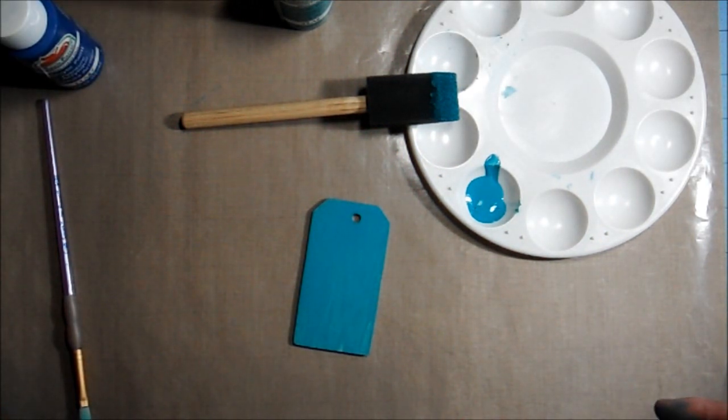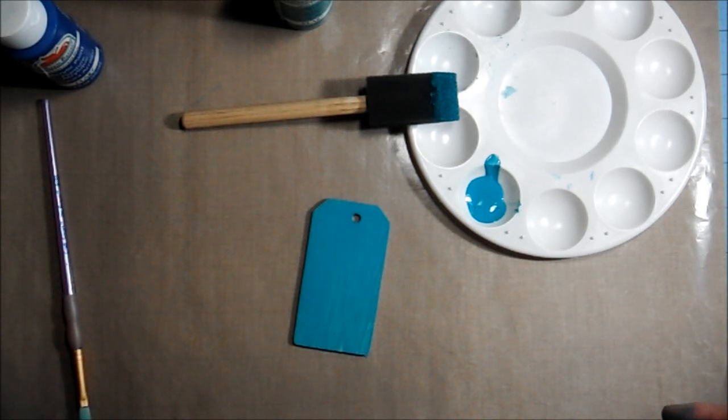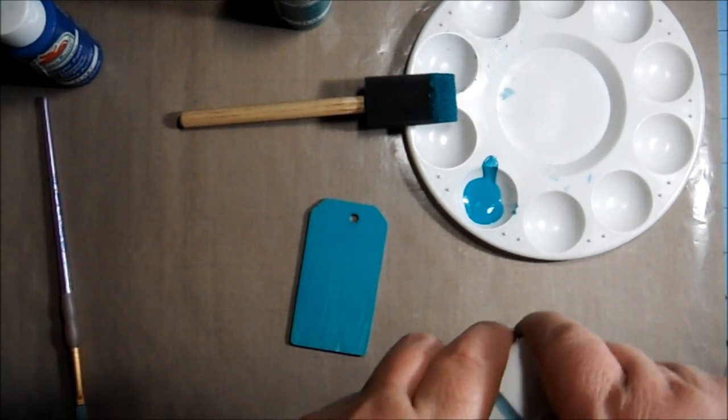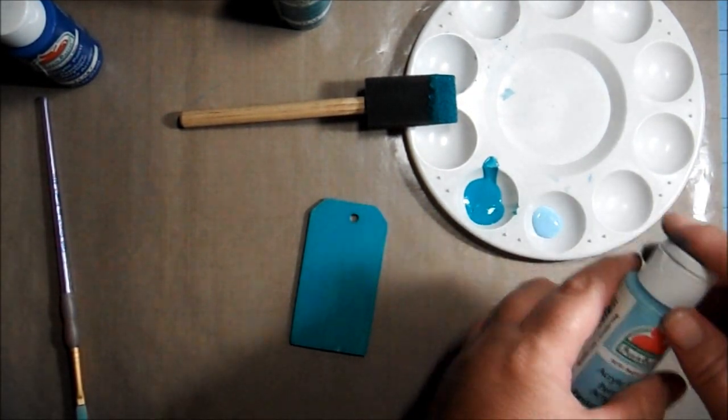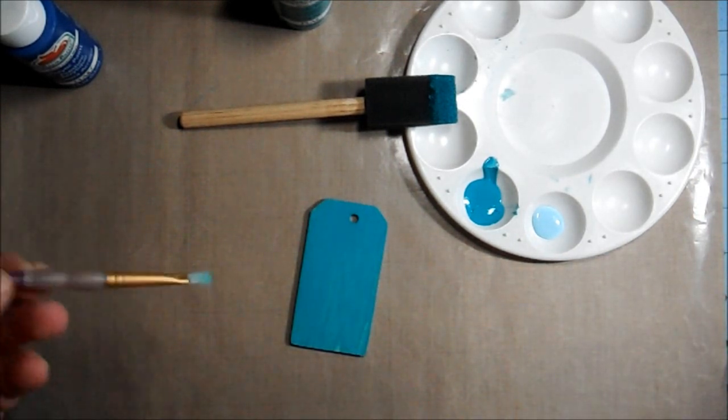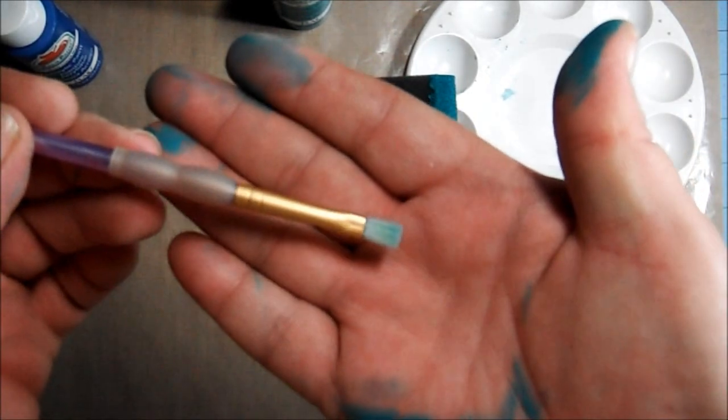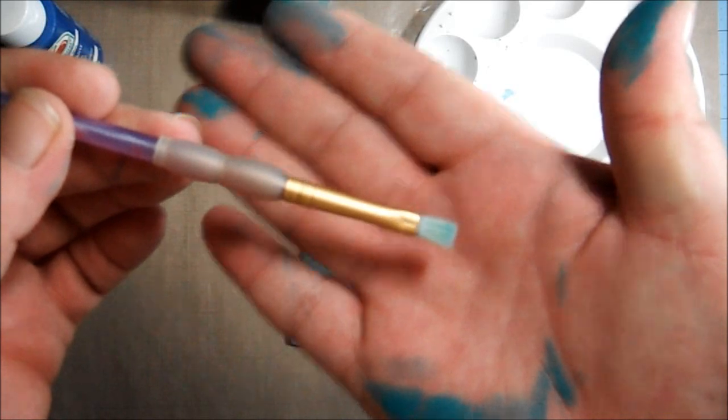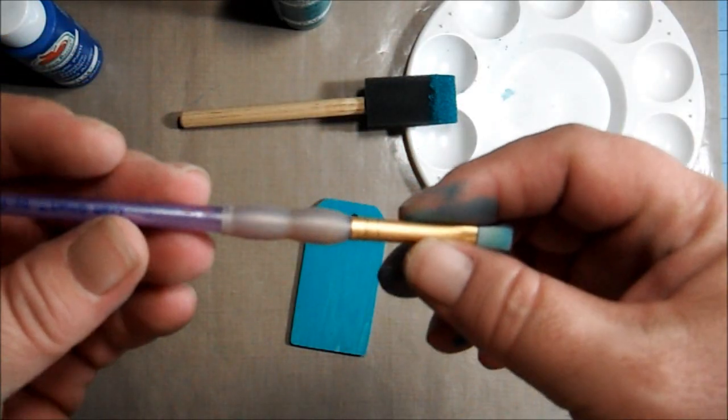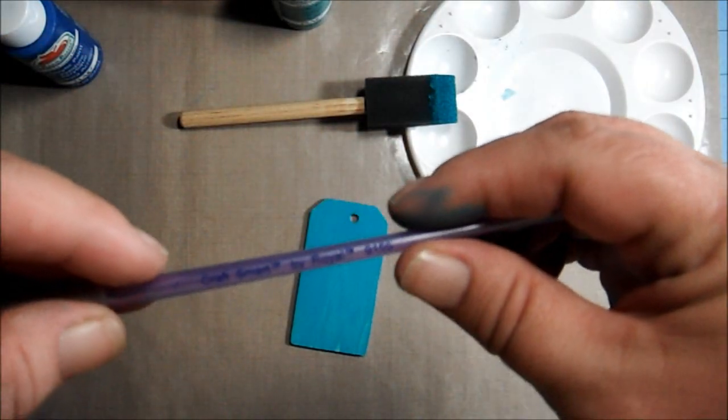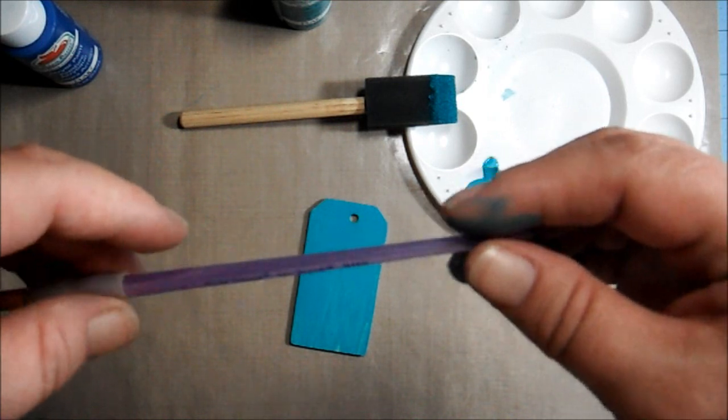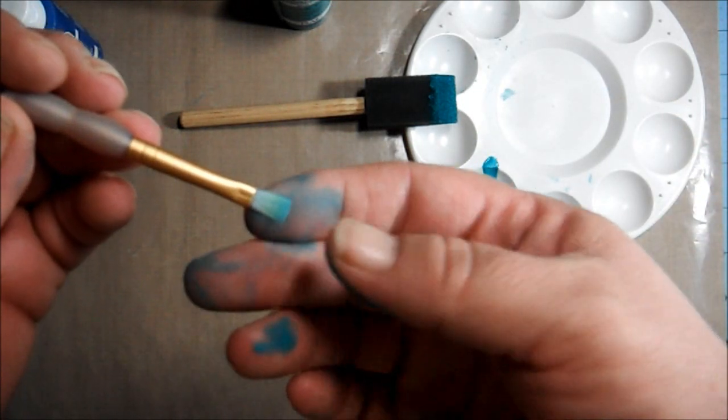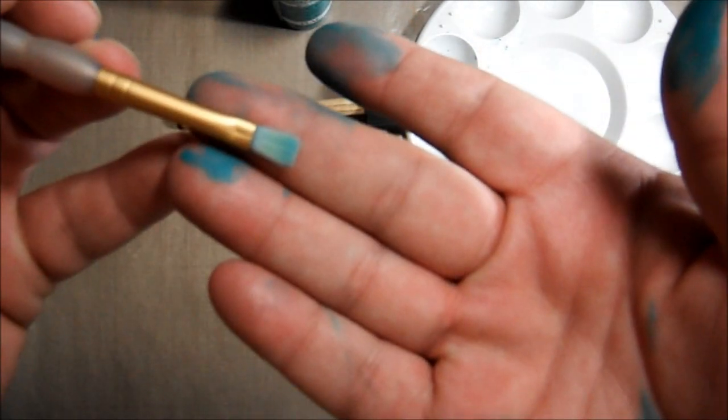So what I did next is I took my lightest color, which is the Regency Blue. I just took another paint brush. I use a fine tip. It just says Craft Smart by Royal. Anyway, it's not a very big brush tip.